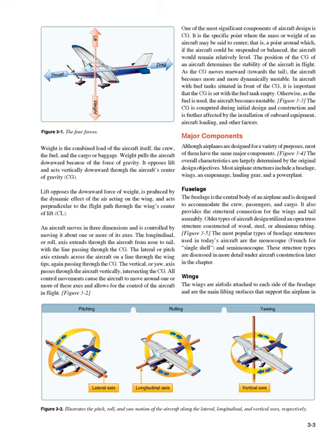One of the most significant components of aircraft design is CG — the center of gravity. It is the specific point where the mass or weight of an aircraft may be said to center; a point around which, if the aircraft could be suspended or balanced, the aircraft would remain relatively level. The position of the CG determines the stability of the aircraft in flight. As the CG moves rearward, towards the tail, the aircraft becomes more and more dynamically unstable.